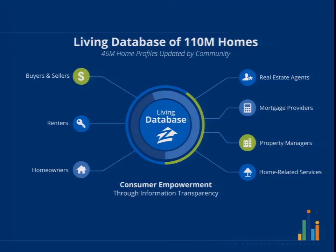Here's our graph of data sophistication. We can take our living database of homes and show raw data on our website — incredibly useful to consumers who haven't been able to find this data before. The second level is to take the data, perform some analysis, and provide information — a step above just raw data. The third level, insight, is really what we want to provide to consumers, where they're able to take our analysis and draw insight to be more empowered when making real estate decisions.